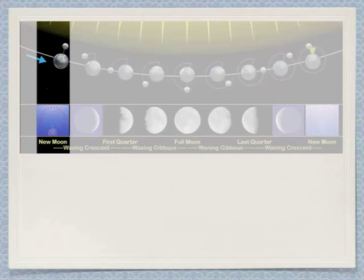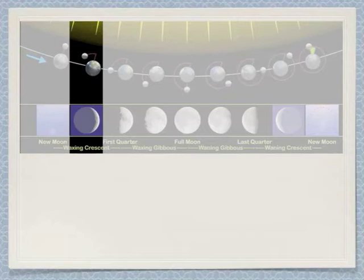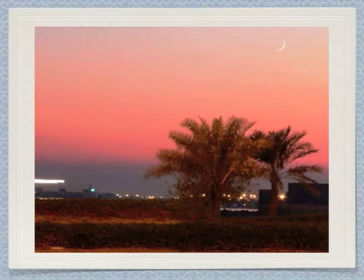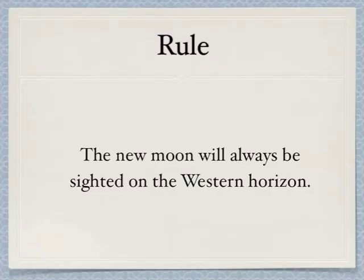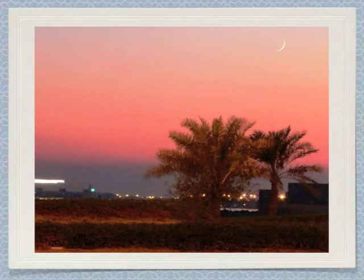So the new moon is when it's invisible; it moves slightly and becomes a crescent, and this marks the beginning of the month. The new moon at the beginning of the month will look something like this. Now, if you return to our diagram, you will note that the moon is in between the sun and the earth. So when the moon is just visible, it will be seen just where the sun set — in the direction where the sun was. And where was the sun? The sun was in the west. And so for this reason, we can understand the rule that the new moon of the month will always be sighted on the western horizon, in the area where the sun set.